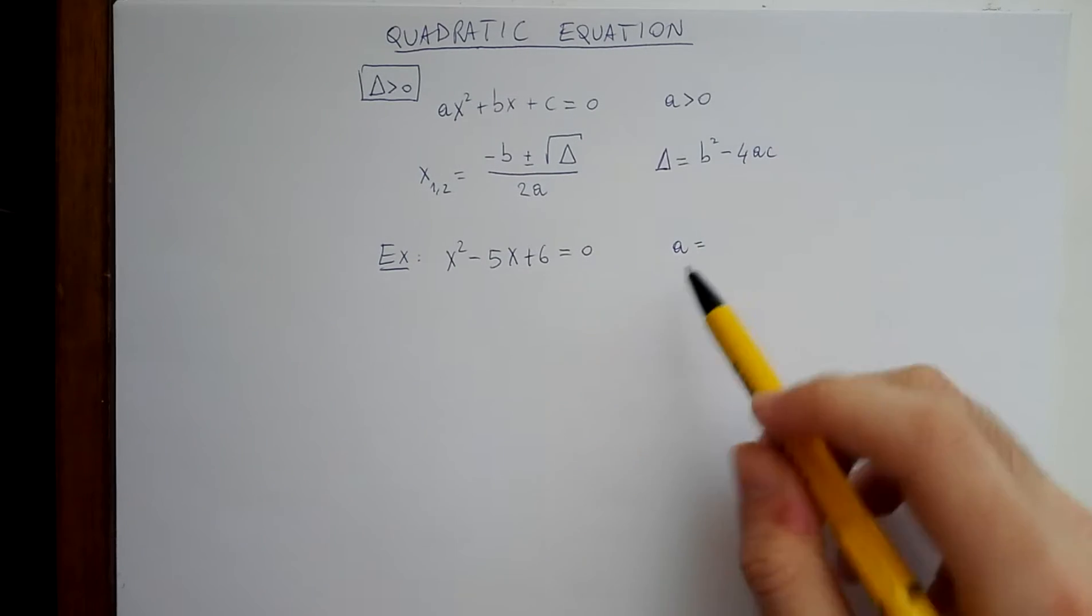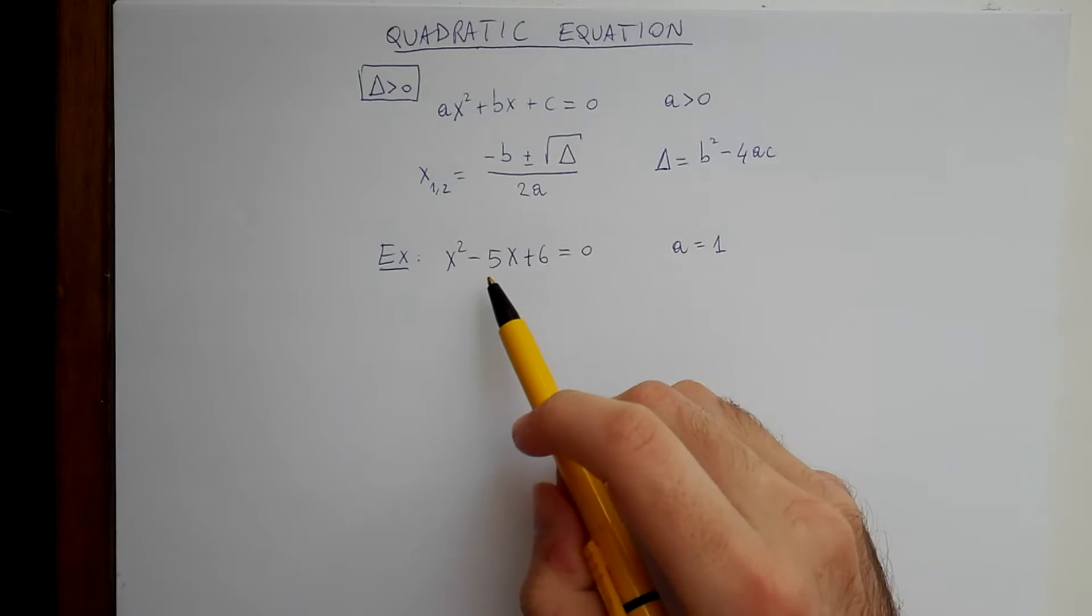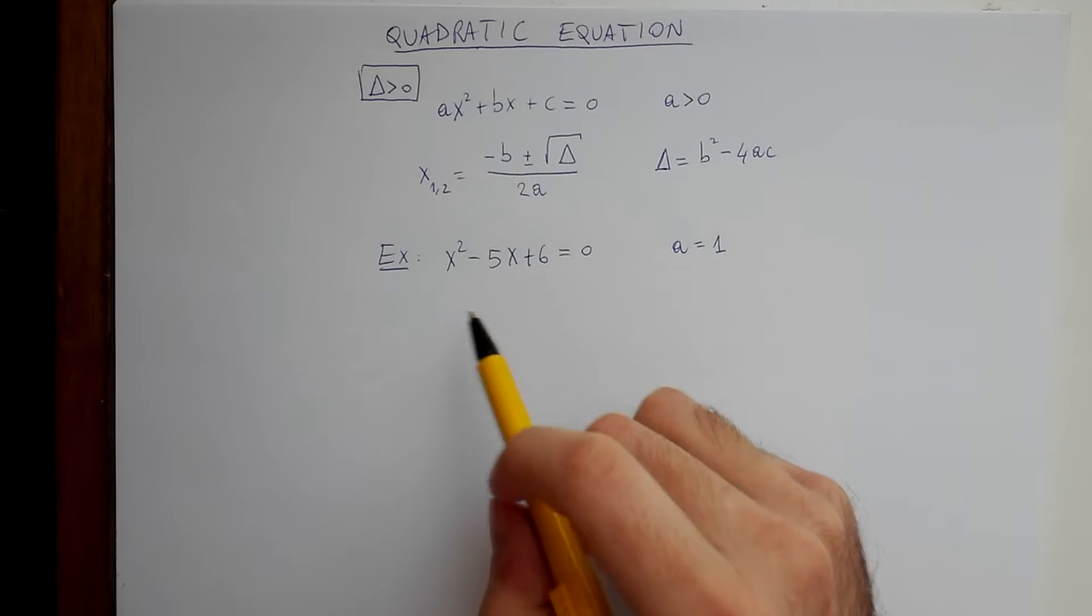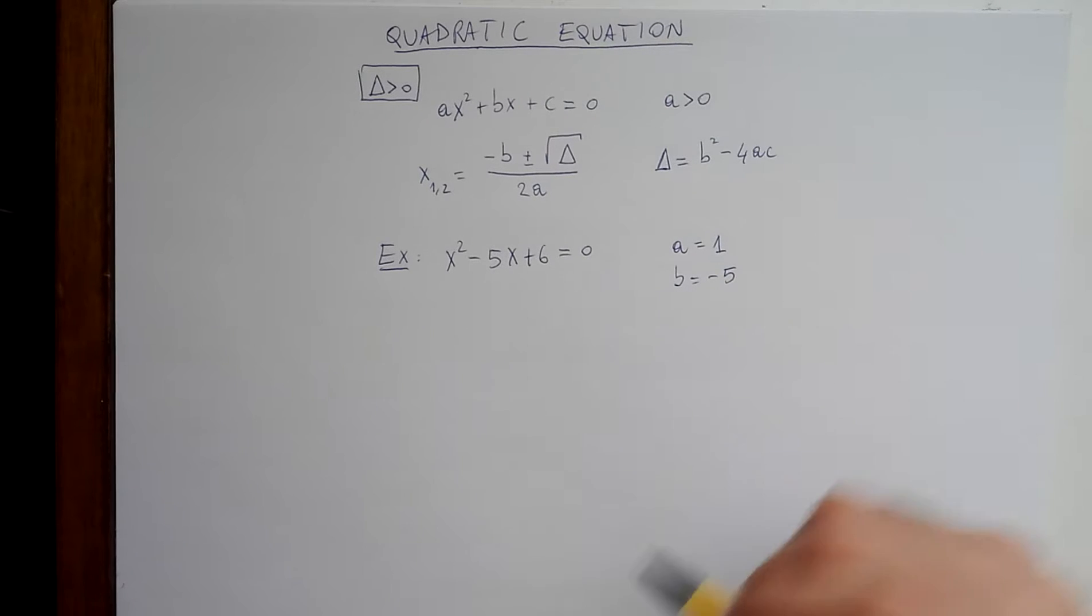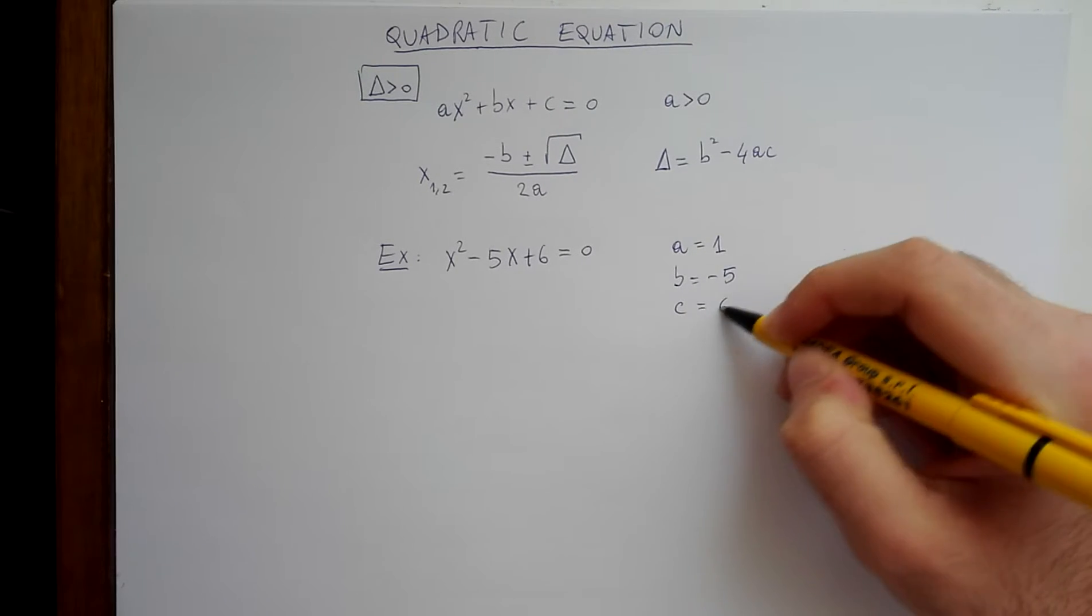So a is the coefficient of x, so it's 1. b is the coefficient of, sorry, a is the coefficient of x squared. The coefficient of x is minus 5, while c is 6.